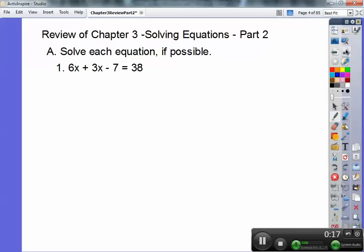So first we've got to combine like terms. 6x plus 3x gives me 9x. Bring down the minus 7 and the equals and the 38. Now we're going to add 7 to both sides. Remember, we do addition and subtraction first when we solve equations and multiplication and division last, order of operations backwards. So the 7s cancel and you have 9x equals 38 plus 7 is 45, then divide both sides by 9 and you should get x equals 5.